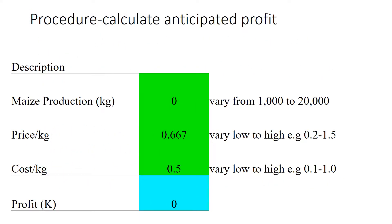To be able to make any calculations, let's take this example: you want to produce maize — you want to go into maize farming — and you are thinking to produce between 1,000 to 20,000 kg of maize. The price right now is 0.66 per kg and the cost is about 0.50 per kg. What you are trying to understand is what kind of profitability you are going to achieve should the business be like this.